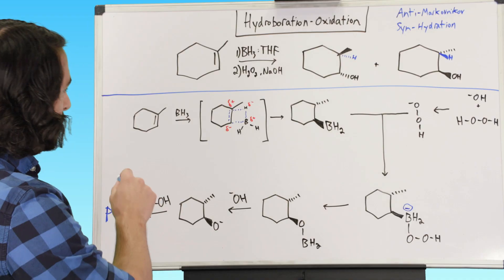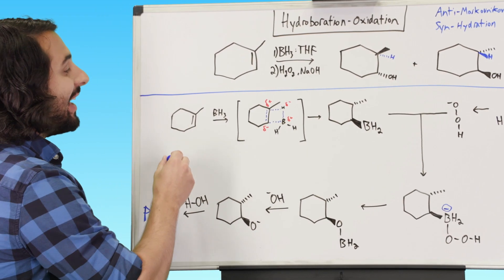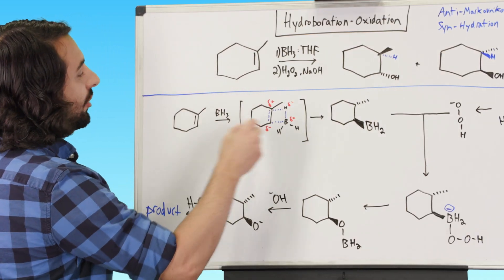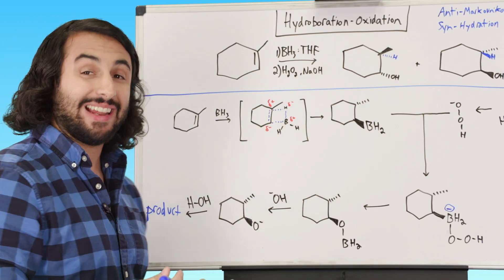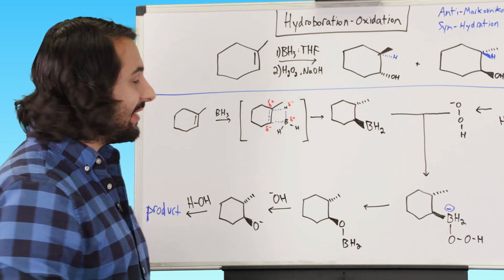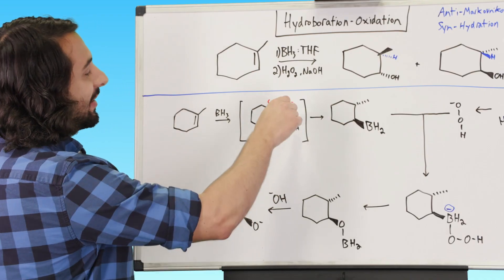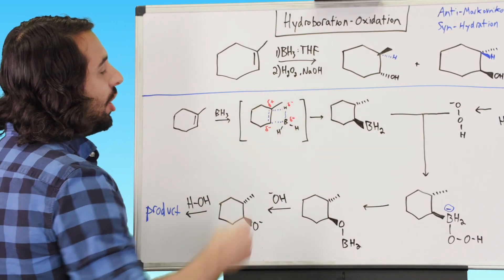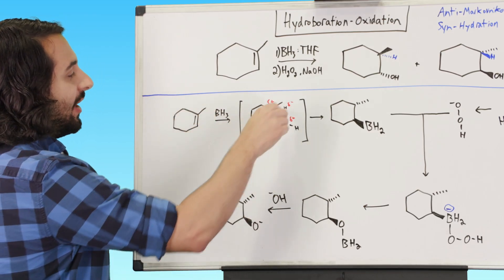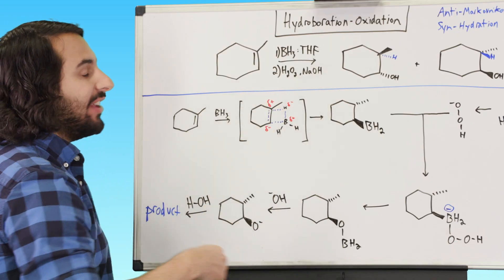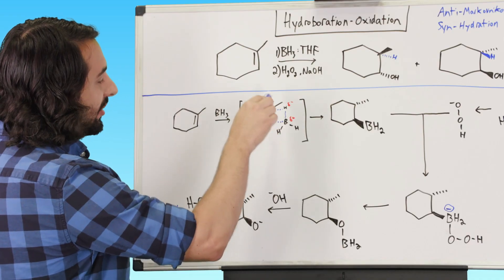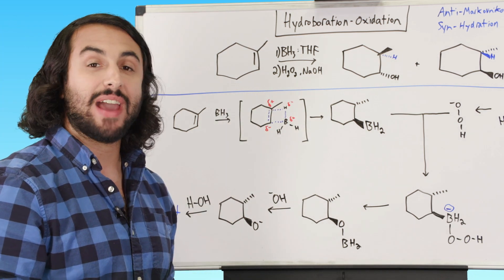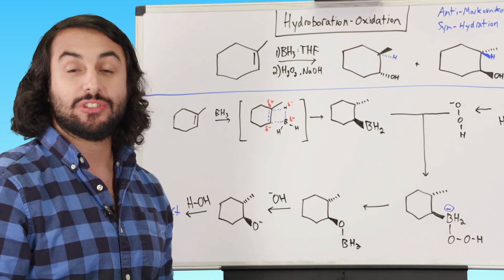To elucidate why we have this regiochemistry and stereochemistry built into this reaction, let's look at the mechanism. Both the regiochemistry and the stereochemistry occur in the hydroboration step — the addition of BH3 to the molecule. BH3 is a bit different: boron is actually a very electropositive element, it's in group three, more electropositive than carbon. So a B–H bond is going to be very slightly polarized towards the hydrogen. In general that covalent bond is slightly polarized towards the hydrogen.